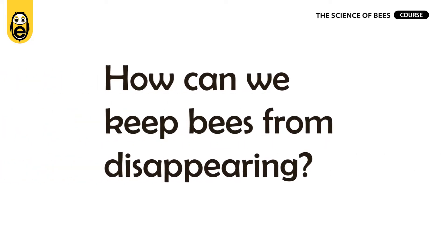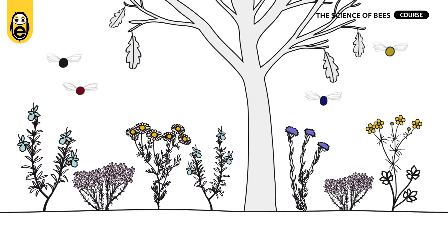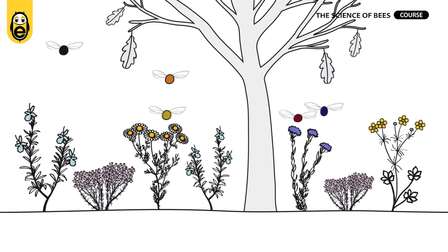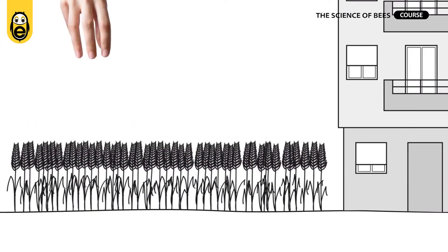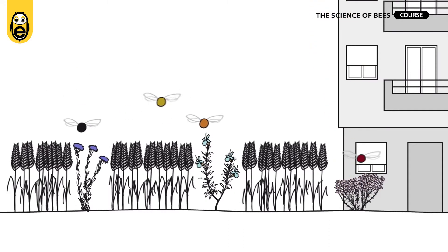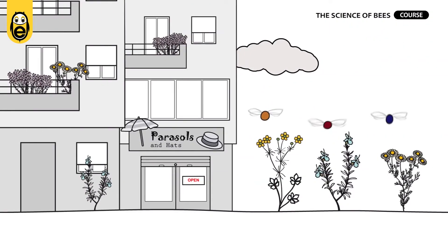What can we do? Well, many things. First, we need to better maintain our landscape by preserving natural areas. Also, we need to make our cities and crops more friendly for bees. For example, growing native flowers in them.